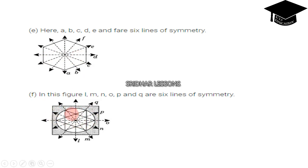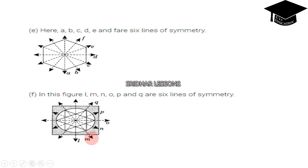For picture F also, we can cut into six lines. Observe this picture carefully — picture F. How many lines are there? Six lines. What are they? L, M, O, P, and Q. These are the six lines of symmetry.